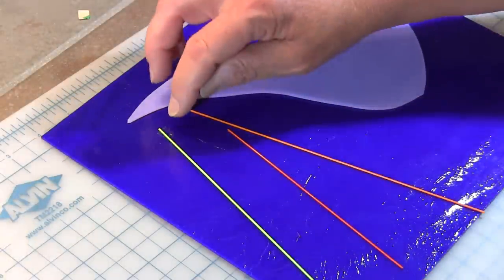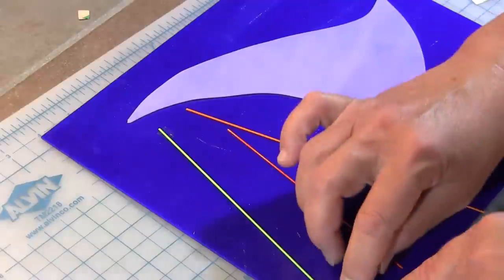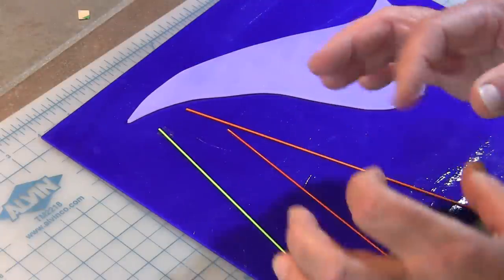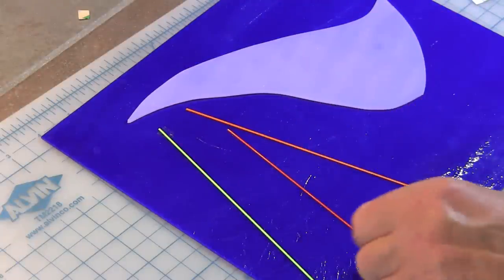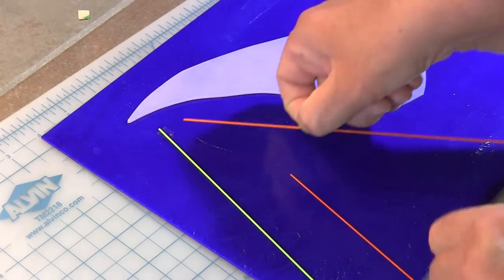The only time the tape will show up is if you sprinkle powders over it, and then the outline of the tape tends to show up. So you don't want to use this with powders.